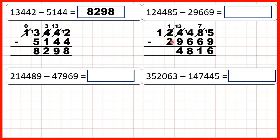We can't do 1 minus 2 because 2 is larger than 1, so again go to the left, one less, one in front, and 11 minus 2 is 9. Now we have 0 minus nothing, so we don't need to write anything in our hundred-thousands place. Our answer is 94,816.